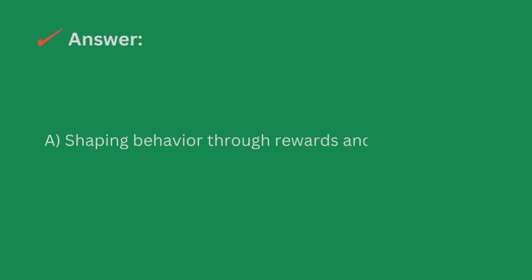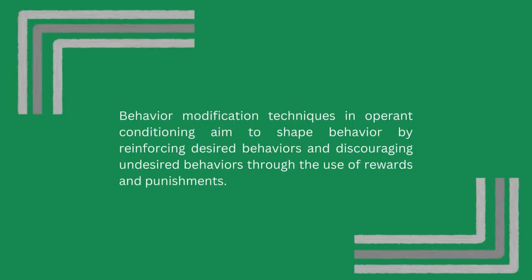The answer is letter A, shaping behavior through rewards and punishments. Behavior modification techniques in operant conditioning aim to shape behavior by reinforcing desired behaviors and discouraging undesired behaviors through the use of rewards and punishments.